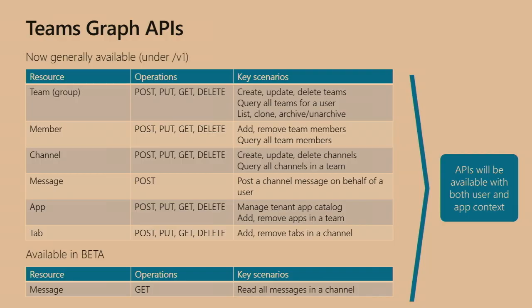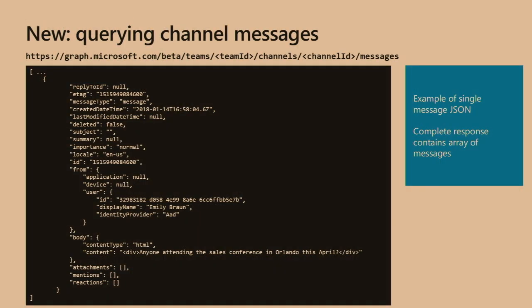The Graph API is a RESTful API, so we can go through and interact with that service. For example, we can query channel messages and get back a JSON list of messages from a particular channel, then go and do something with that data.